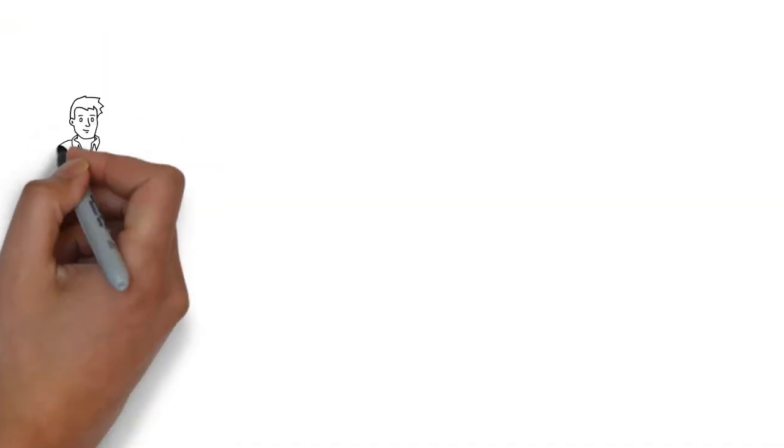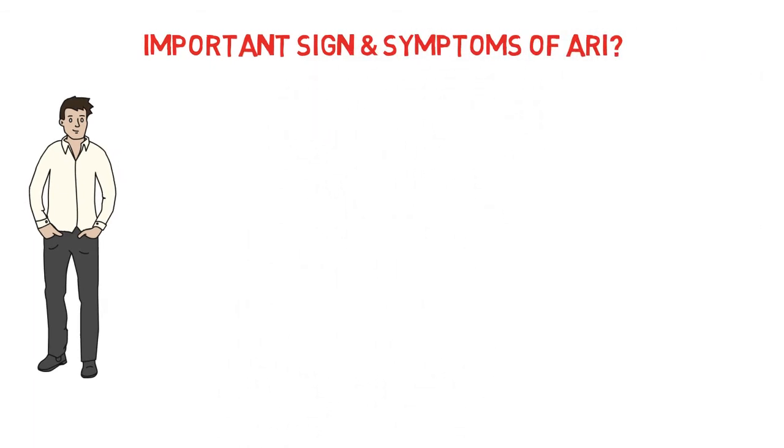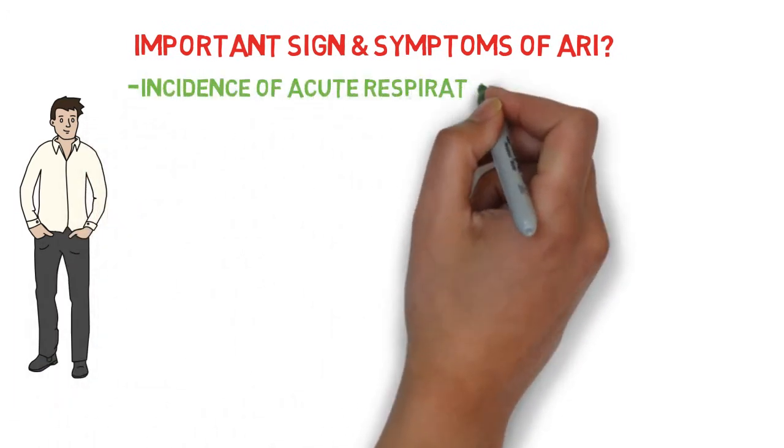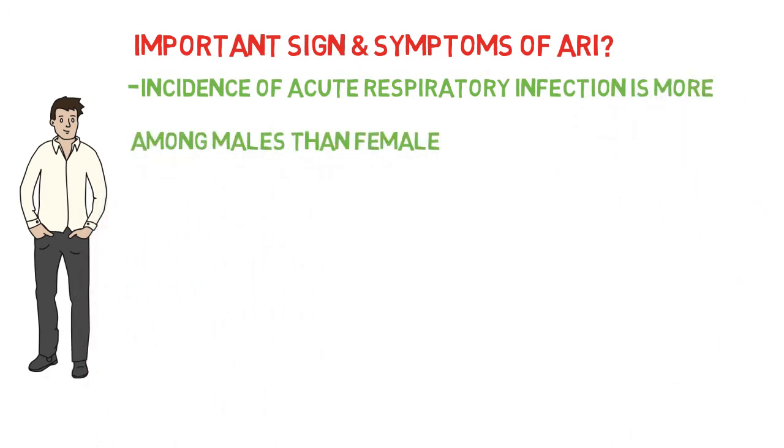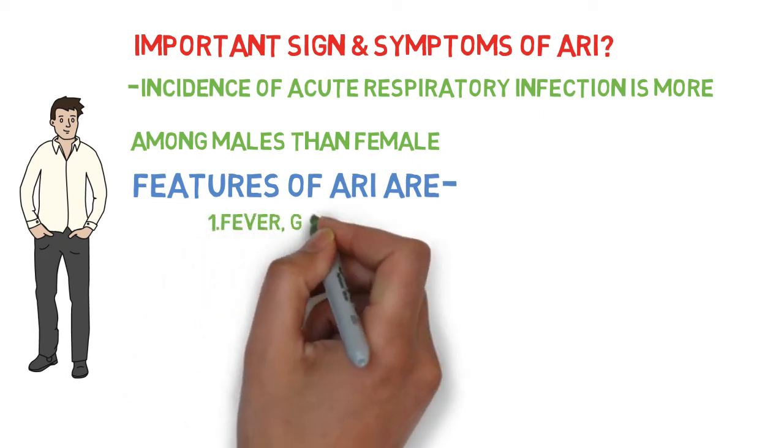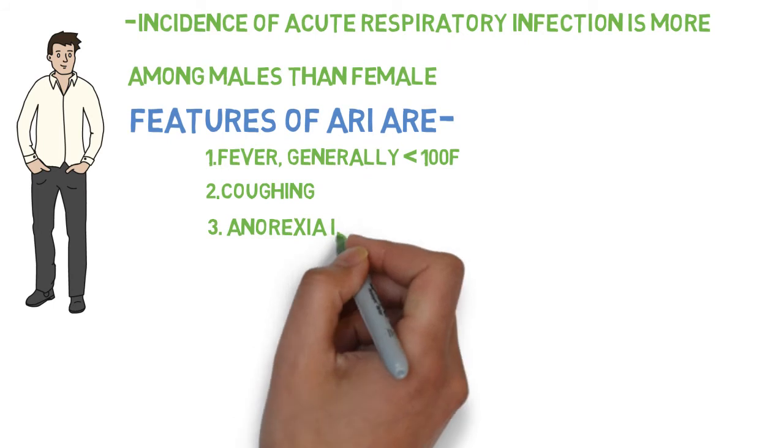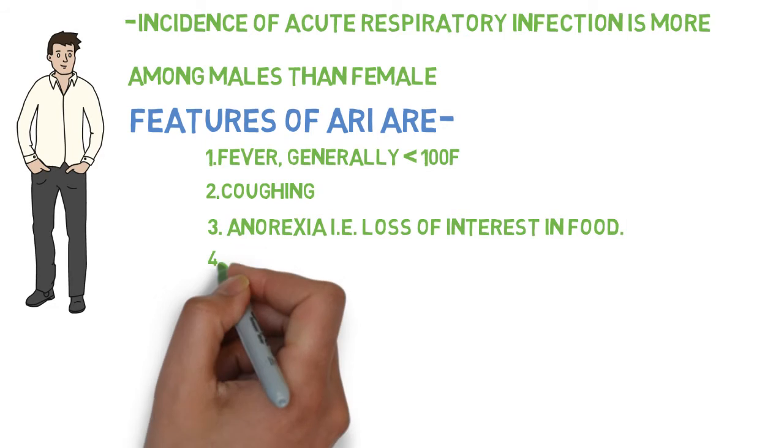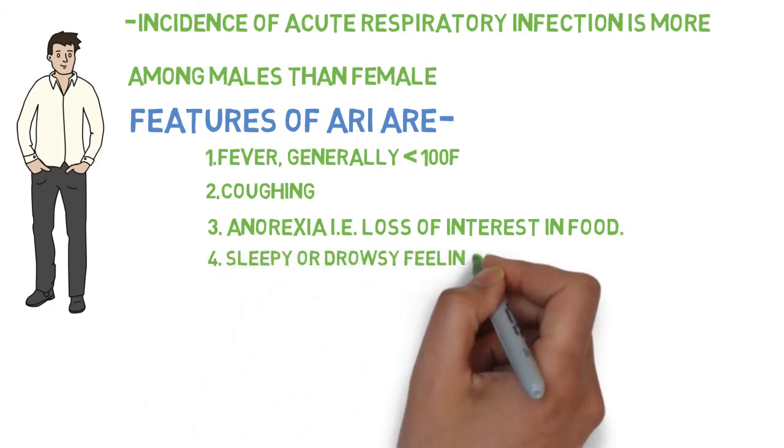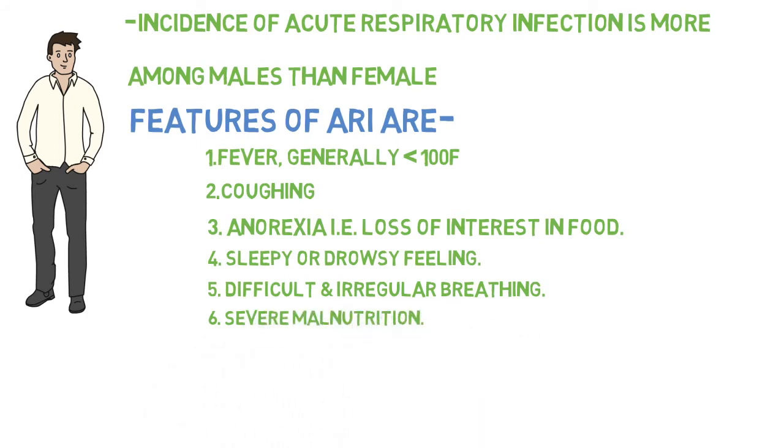Now we will discuss the important signs and symptoms of acute respiratory infection. Incidence of acute respiratory infection is more common among males than females. Features of ARI are: number one, fever, generally body temperature over 100 degrees Fahrenheit; second, cough; third, anorexia, that is loss of interest in food; fourth, sleepy or drowsy feeling; fifth, difficult and irregular breathing; sixth, severe malnutrition; number seven, hypoxia, that is body is deprived of adequate oxygen supply at the tissue level.